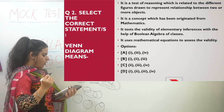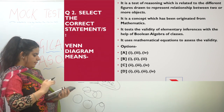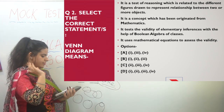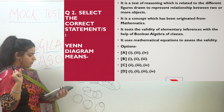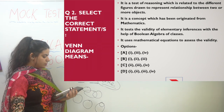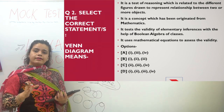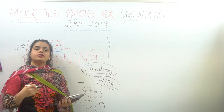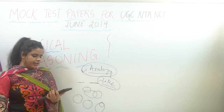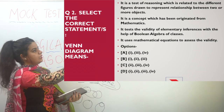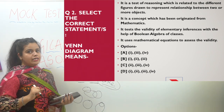The third statement says it tests the validity of elementary inferences with the help of Boolean algebra of classes — this is absolutely right. The fourth statement says it uses mathematical equations to assess validity — this is wrong. Venn diagrams originated from mathematics but do not use mathematical equations themselves. So the first three statements are true and the fourth statement is wrong.